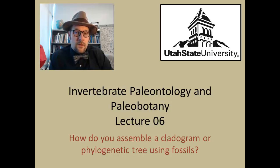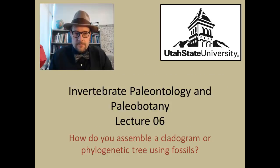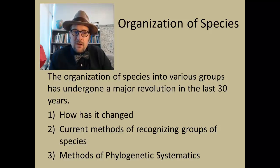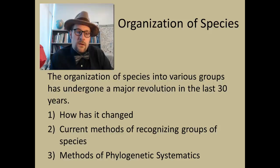Welcome to Invertebrate Paleontology and Paleobotany. This is lecture 6, where I will answer the question: how do you assemble a cladogram or phylogenetic tree using fossils? The methods we use to organize species have undergone a major revolution in the last 30 years. I will talk about how it has changed, current methods for recognizing groups of species, and do a step-by-step demonstration of phylogenetic systematics.